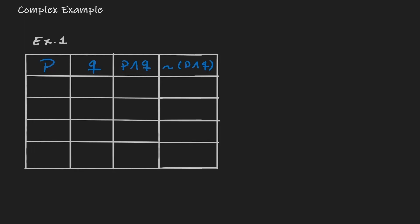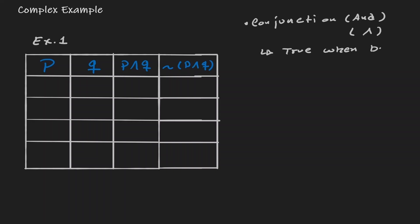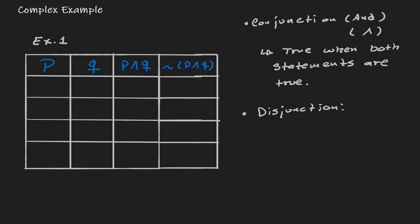So how are we going to be defining the truthness of this table? Let's start by recalling that conjunction statements, using the word 'and' — the symbol is the open arrow — are only true when both statements are true. And for a disjunction, which uses the word 'or,' and the symbol is the lower arrow, it is true if only one statement is true.